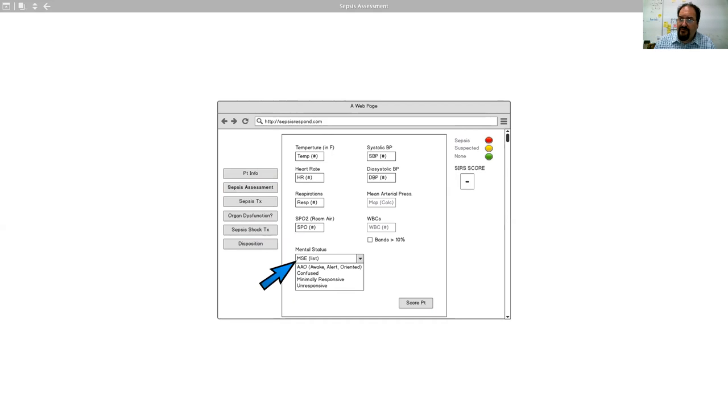One of the things we are asking for of this team is, is this clear? Are these the right options for this? And from our criteria standpoint, these bottom three confused, minimally responsive or unresponsive would all result in a plus one in a SEERS score. So when they fill those in, then fill in these over here. Blood pressure, mean arterial, as you can see, is calculated based on the two above. And so that field is actually not active. And white blood cell count is entered here.